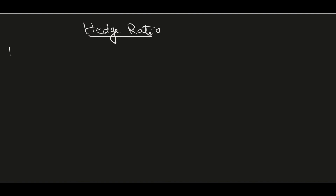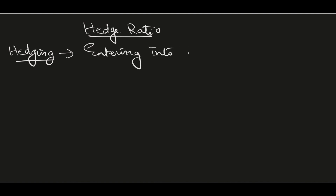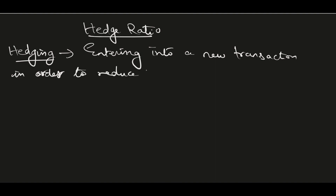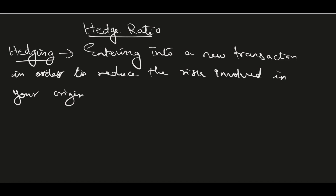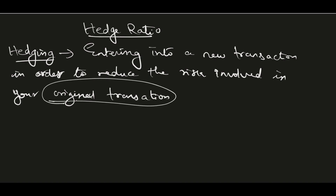Hedging refers to reducing risk. You are entering into a new transaction in order to reduce the risk involved in your original or previous transaction. You have your original transaction, but you want to reduce the risk, so you are entering into a new transaction — that is called hedging.